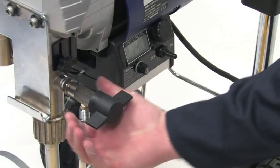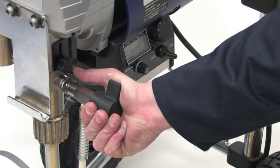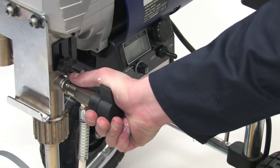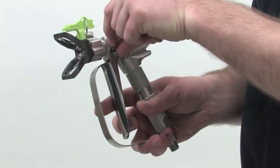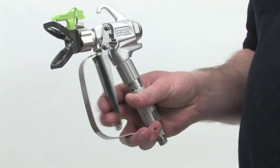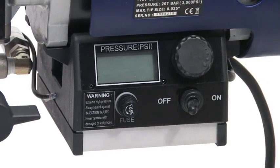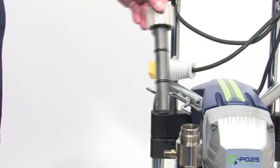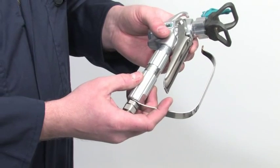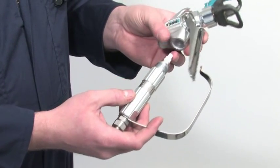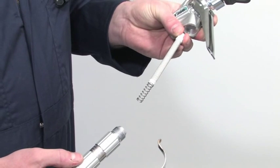Keeping the spray gun trigger squeezed, turn the spray prime valve to the prime position slowly to release the pressure in the system. Then release the trigger on the spray gun and turn the safety trigger catch on. Next, turn the power switch off. Now remove the manifold filter, suction filter and spray gun pencil filter and repeat the flushing process without the filters. Clean the filters in water separately. The sprayer is now clean.